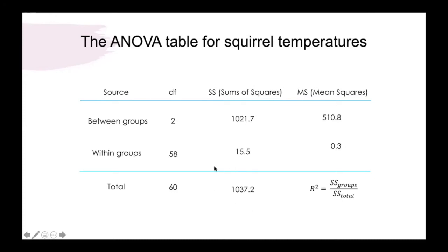If you recall these sums of squares are additive so the between group sums of squares plus the within group sums of squares equals the total sums of squares.